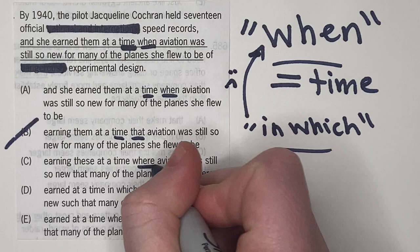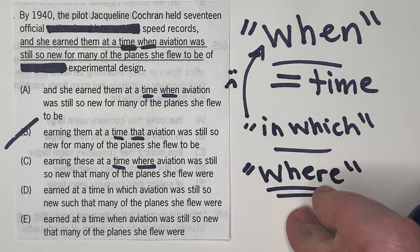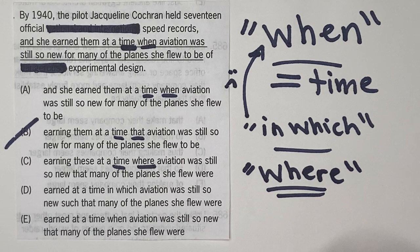A time where, well, that's even more wrong than that, because where on the GMAT is another one of these words like when that only has a very specific meaning. So where can only refer to location. Paris is the place where something happened.